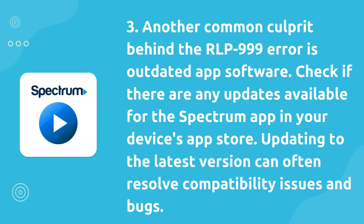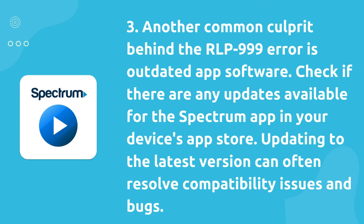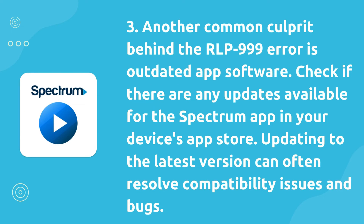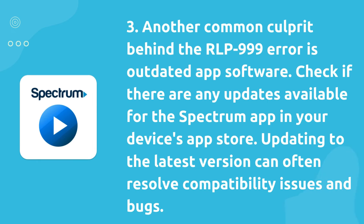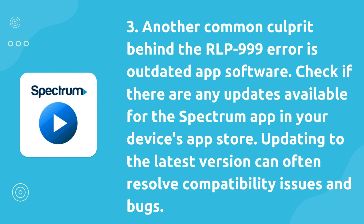Another common culprit behind the RLP 999 error is outdated app software. Check if there are any updates available for the Spectrum app in your device's app store. Updating to the latest version can often resolve compatibility issues and bugs.